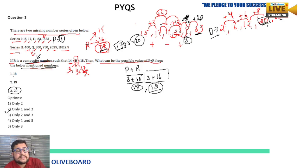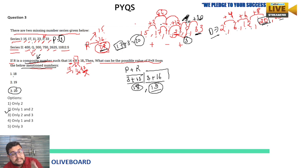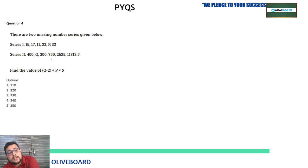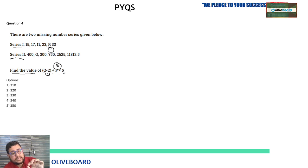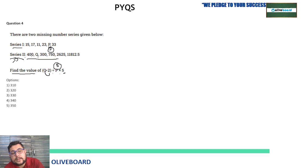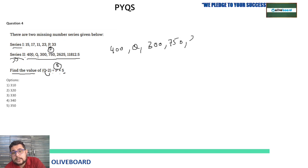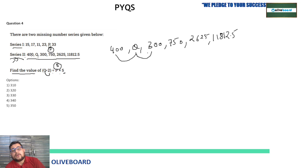We haven't solved the second series yet, but it will be used in the next question. The question asks: find the value of (Q − 2) ÷ P × 5. We already know P = 3 from the previous solution. Now we need Q from Series 2: 400, Q, 300, 750, 2625, 11812.5. Since Q is the second term, we start analyzing from the third term onward.